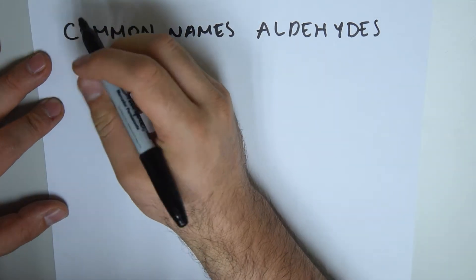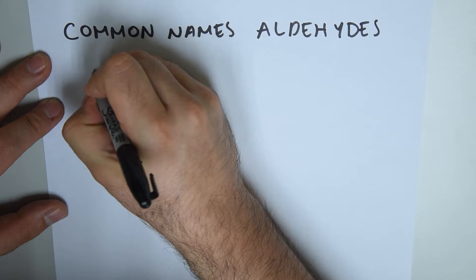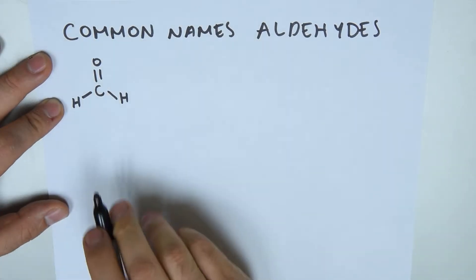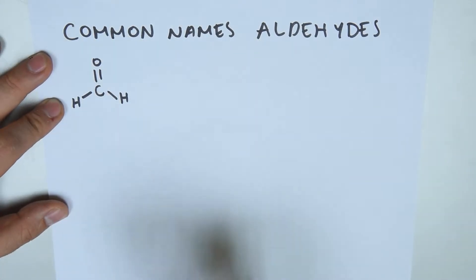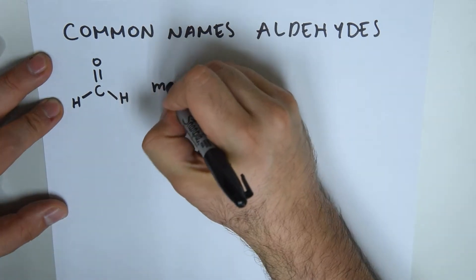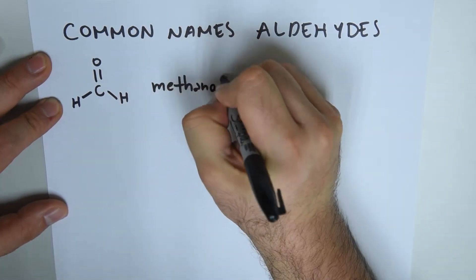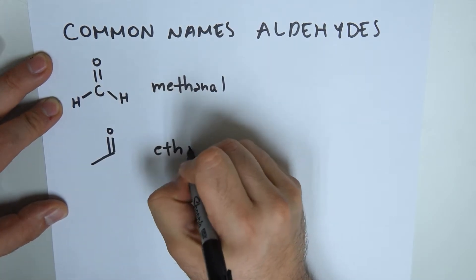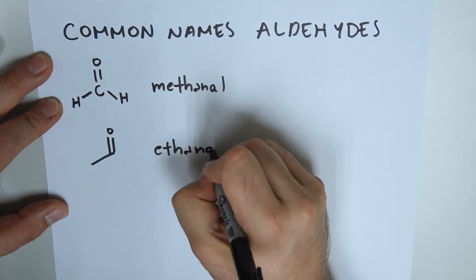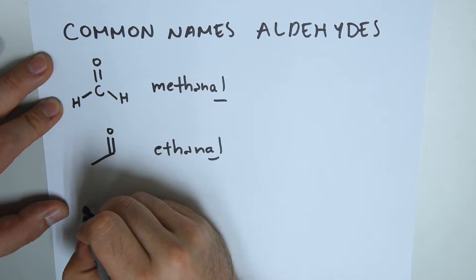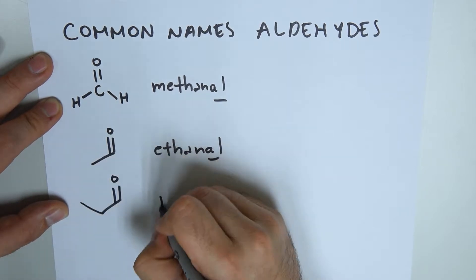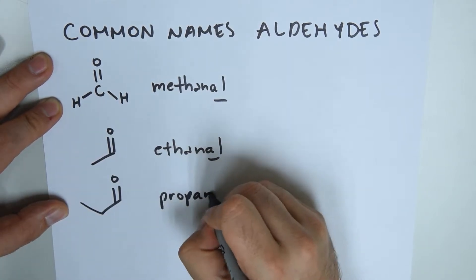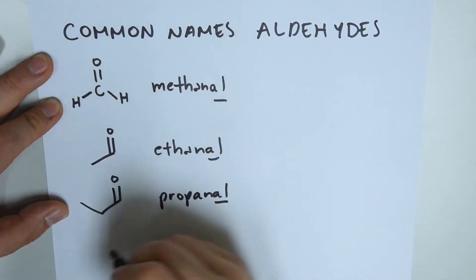If we only have a carbon double bonding to O with H's on the side, that means we only have one carbon. This is an aldehyde called methanal. Then the next one with two carbons is ethanal. And then the next one with three carbons is propanal, which has three carbons with a carbonyl group.